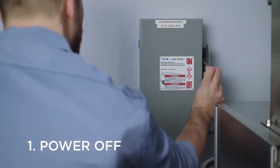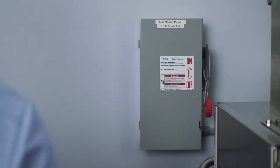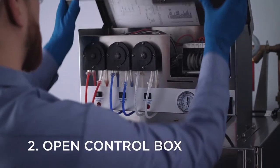First, you'll need to power down the unit by switching off the circuit breaker. Then, open the control box to access the chemical lines.